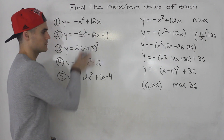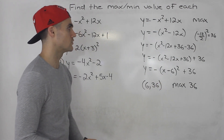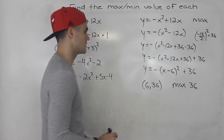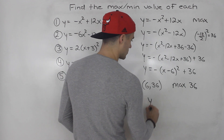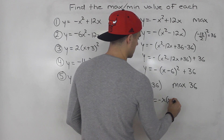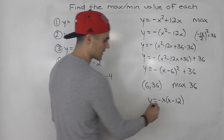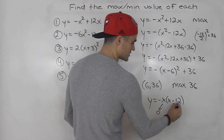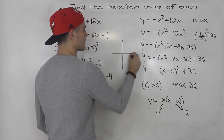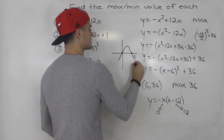That's mostly how I'm going to be doing these — getting the y value of the vertex. Another way you could have done this is to actually factor: take out a negative x and you'd be left with x minus 12. From here you can tell the intercepts are zero and 12, so graphing that gives a parabola with those x-intercepts.